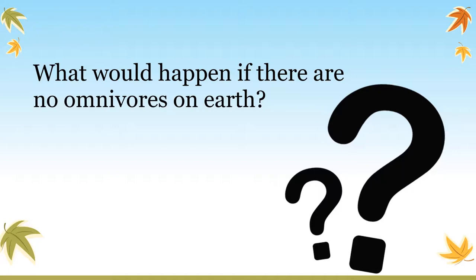In both cases, the balance of nature is disturbed. What would happen if there were no omnivores on earth? Omnivores eat both plant and animal products, so they help keep a balance on both. If omnivores disappeared from earth, it would also affect nature's balance. So these food habits of different animals help in maintaining the balance of nature.